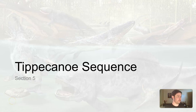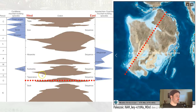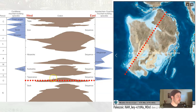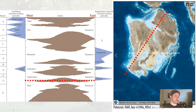Welcome back. Let's talk about the Tippecanoe sequence. We talked about the Sauk sequence, so now let's get into the Tippecanoe sequence. This is between the Tippecanoe sequence and the Taconic Orogeny that we'll talk about next section. This generally represents what occurred during the early part of the Paleozoic era, and then the Kaskaskia, Absaroka, and other mountain-building events represent more of what happened in the latter parts of the Paleozoic era.